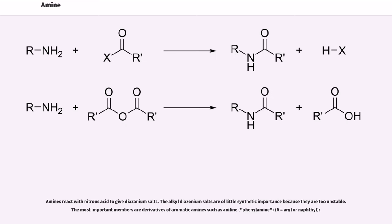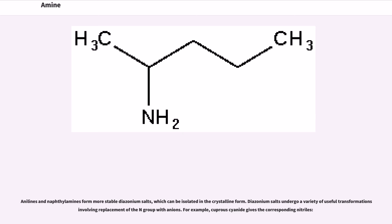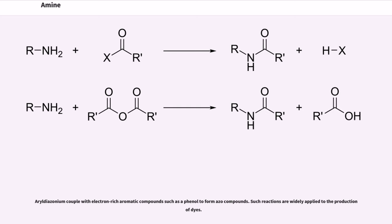Amines react with nitrous acid to give diazonium salts. The alkyl-diazonium salts are of little synthetic importance because they are too unstable. The most important members are derivatives of aromatic amines such as aniline, phenylamine, Ar equals aryl or naphthyl. Anilines and naphthylamines form more stable diazonium salts, which can be isolated in the crystalline form. Diazonium salts undergo a variety of useful transformations involving replacement of the N2 group with anions. For example, cuprous cyanide gives the corresponding nitriles. Aryldiazonium couple with electron-rich aromatic compounds such as phenol to form azo compounds. Such reactions are widely applied to the production of dyes.